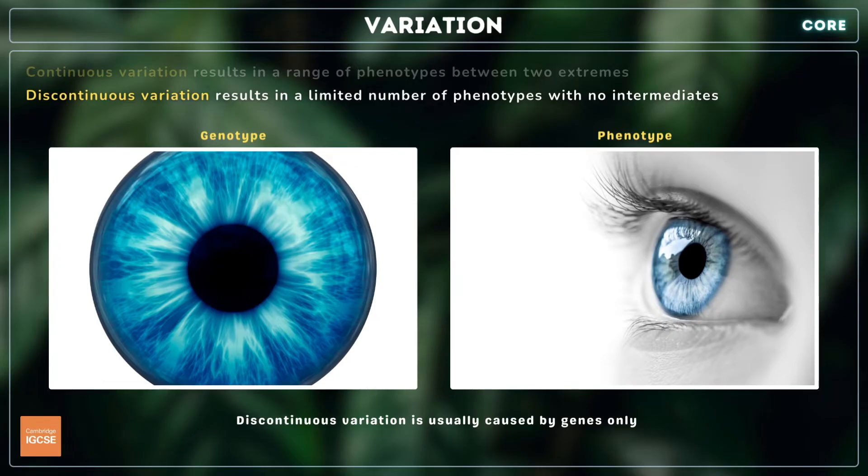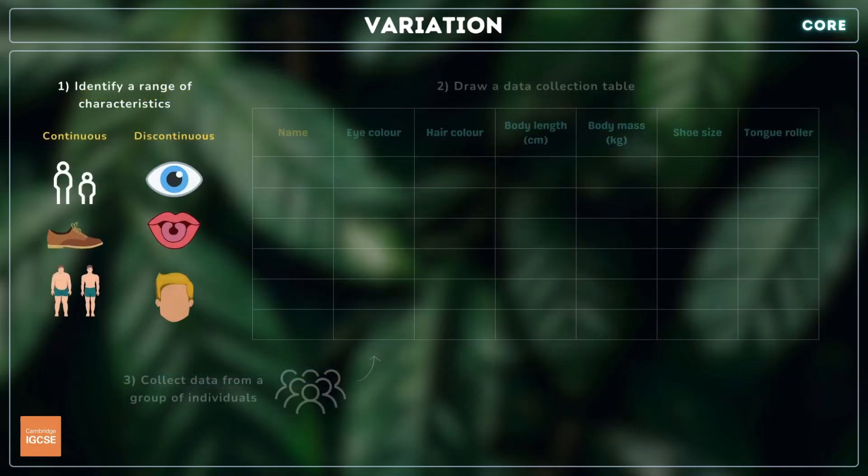You need to be able to investigate and describe examples of continuous and discontinuous variation. Start by identifying a range of continuous and discontinuous characteristics, such as eye colour, hair colour, height, body mass, shoe size, and whether or not an individual can roll their tongue.